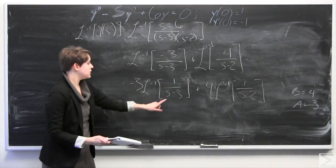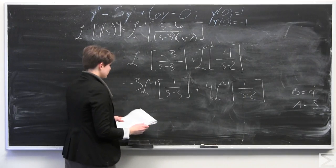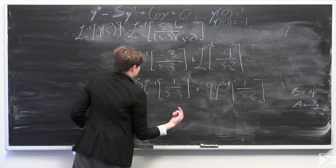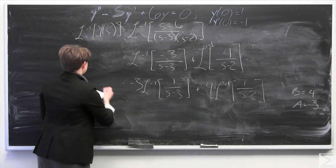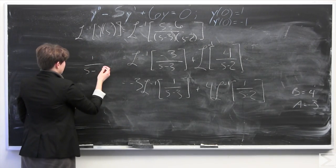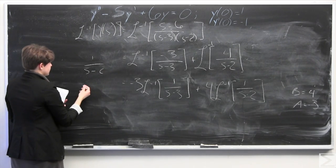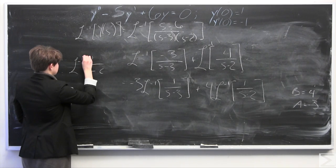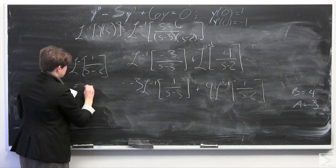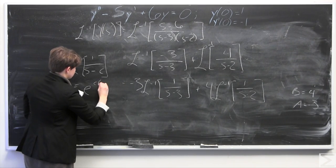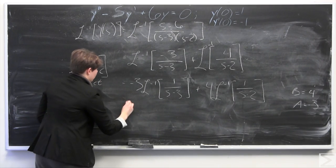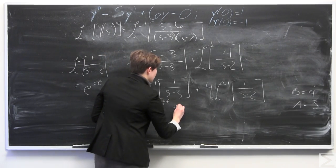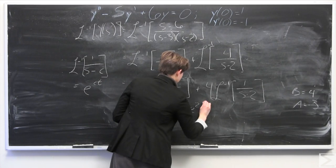Now we're in business because we know these are well-defined inverse Laplace transforms. Anything of the form 1 over s minus c, where c is a constant, has inverse Laplace transform equal to e to the ct. Therefore, this equals negative 3 times e to the 3t, plus 4 times e to the 2t. And there we have our final answer.